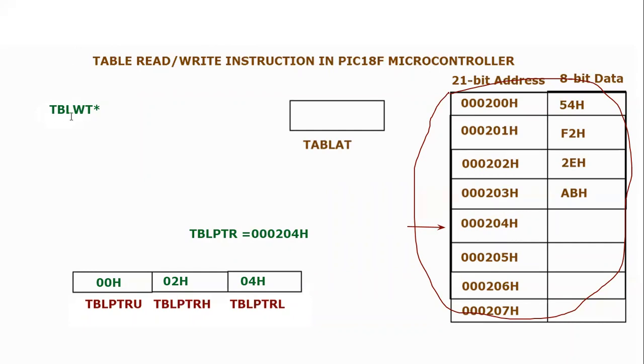Let's say I'm going to write this instruction: TBLWT star. Star means we are going to be using a pointing register in indirect mode.